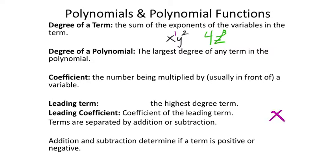If you see a term like x with no visible coefficient, remember it has a phantom one — a coefficient of 1 that's still there, lurking. Sometimes you won't see it, but it's always there. Those phantom one coefficients are kind of creepy.